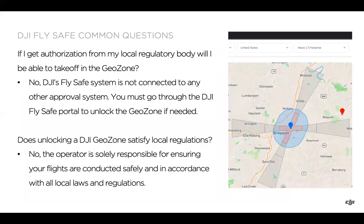A common question we get is: if you get authorization from your local regulatory body, are you going to be able to take off in a GeoZone that prevents flight? DJI's FlySafe system is not connected to other approval systems, so you're going to need to go through the DJI FlySafe portal to unlock the GeoZone as well. On the flip side, going through the DJI GeoZone and getting approval doesn't necessarily satisfy your local regulations — as the operator, you're solely responsible for ensuring your flights are conducted safely and in accordance with all local laws and regulations.